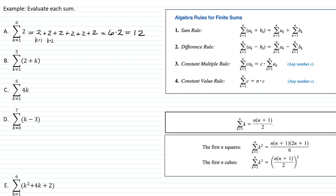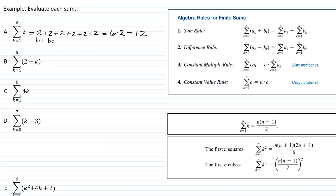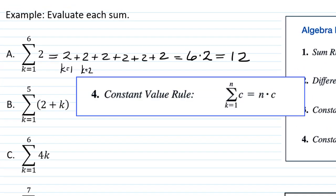Of course, if that had been a value like the sum k equals 1 to 1,000, it's much easier to write 1,000 times 2 than it is to write out 1,000 2s. So that's where the constant value rule comes in. In this case, our c is the 2, and the n is the 6. And since it's fitting this constant value rule pattern, we can just multiply n times c.